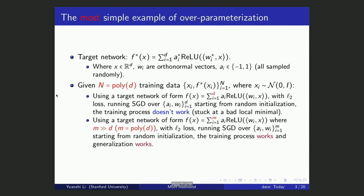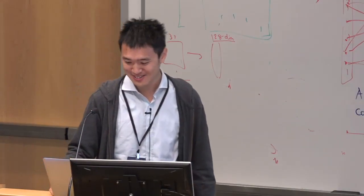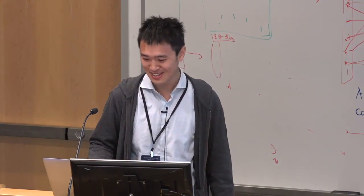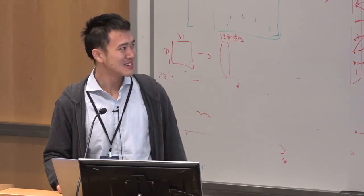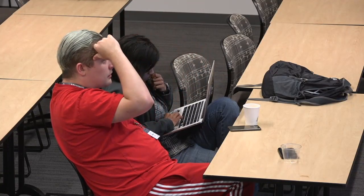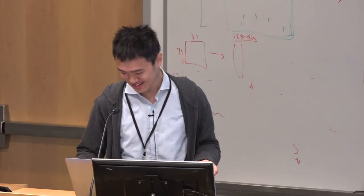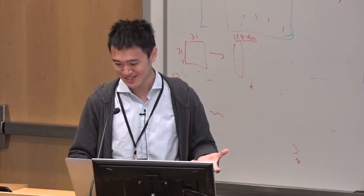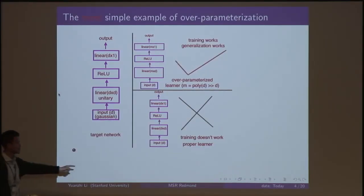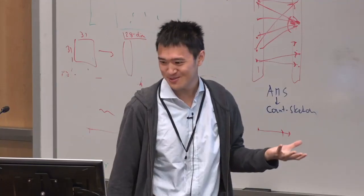But using an over-parameterized network with M hidden neurons, where M is polynomial in D, with L2 loss running SGD from random initialization, training works and generalization works. In practice you might need something like 10D neurons. The number of training samples and iterations are polynomial in D. This is a folklore example known for a couple of years and reported empirically. The real question is: can we formally prove that over-parameterization helps in both training and generalization in this simple example, and what is the fundamental reason?